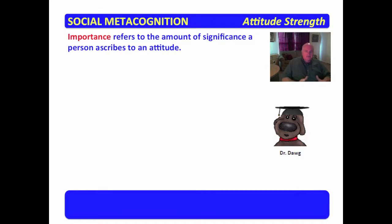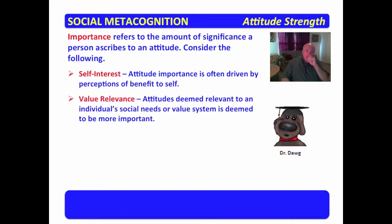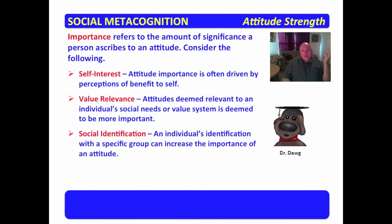Importance refers to the amount of significance a person ascribes to an attitude. Attitude strength is affected by certainty, but it is also impacted by the importance ascribed to the attitude. An attitude is important if it benefits the self, and it is more likely to have strength based on importance if deemed relevant to social needs, value system, or a specific group one is part of — all of these make the attitude feel important, and if deemed important, more strength is ascribed to that attitude.